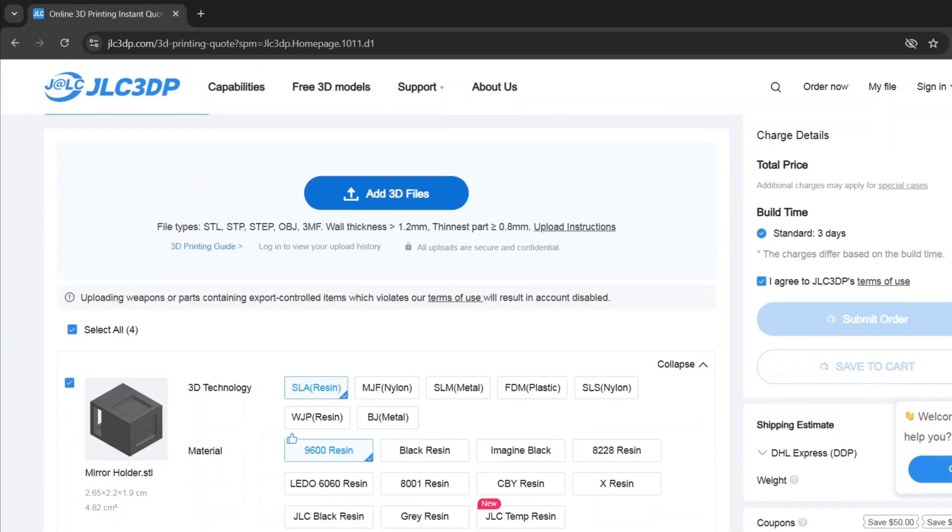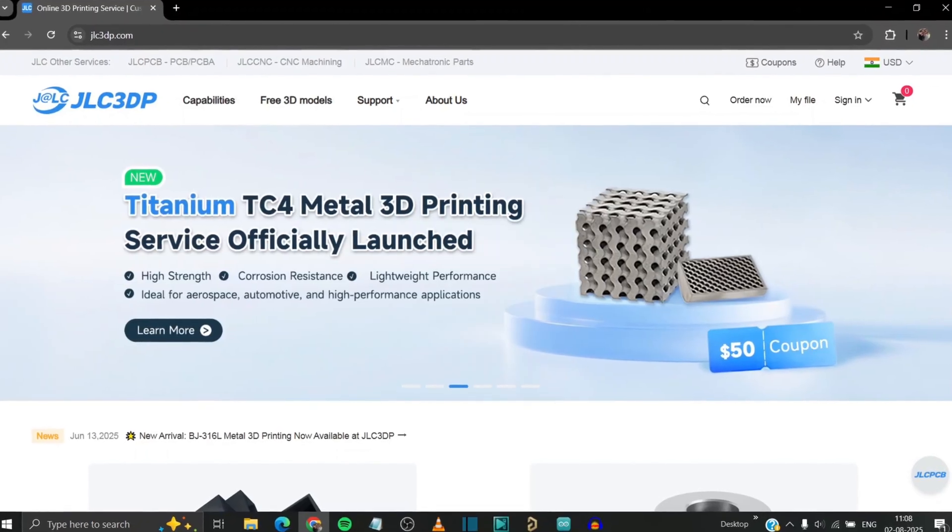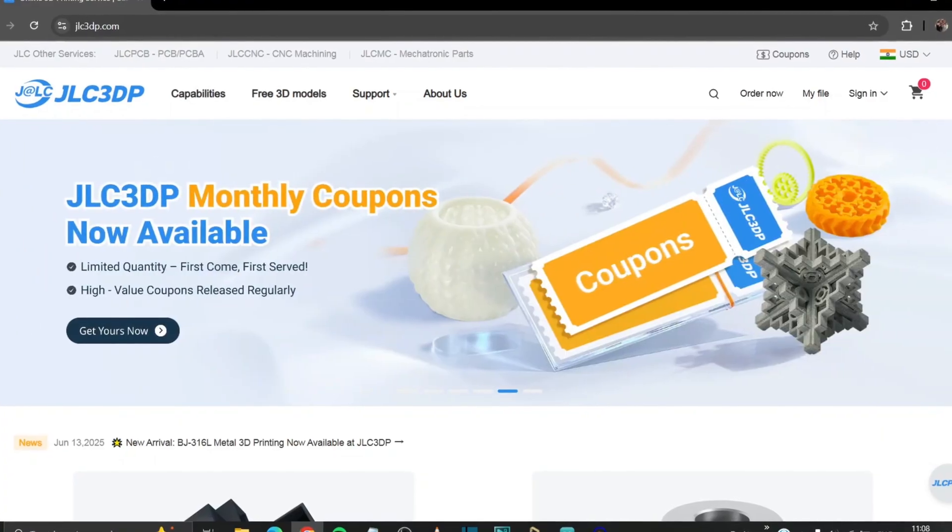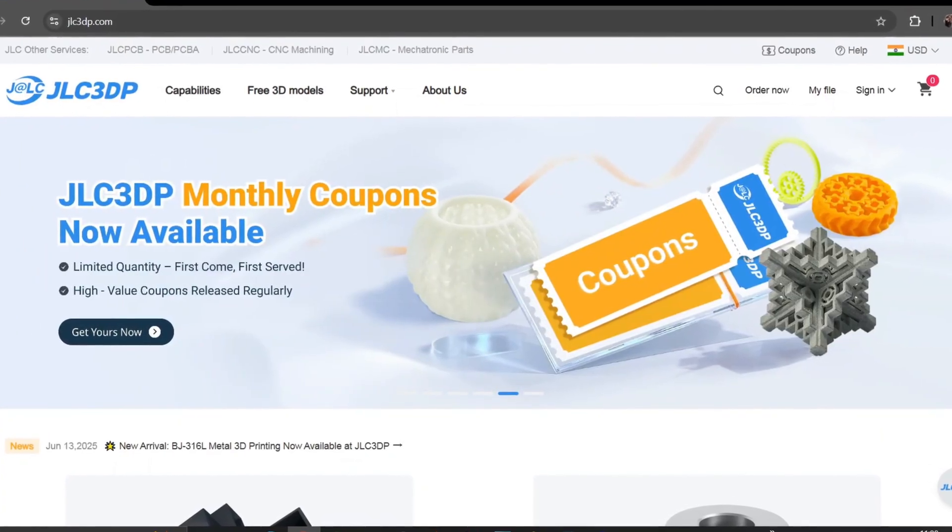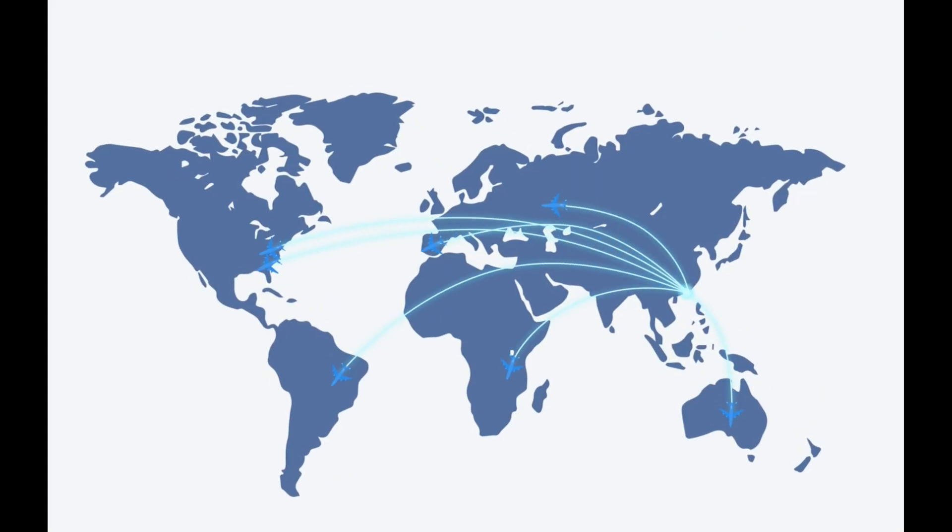Order your parts just by visiting jlc3dp.com, upload the STL file I have provided in description, choose your preferred settings and place your order. JLC 3DP now also offers 3D printing in different metals. If you sign up using my link in the description you will receive a $70 coupon as a new user. They also ship worldwide as well.